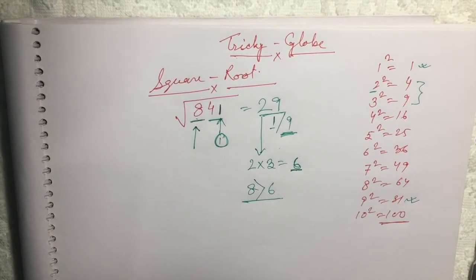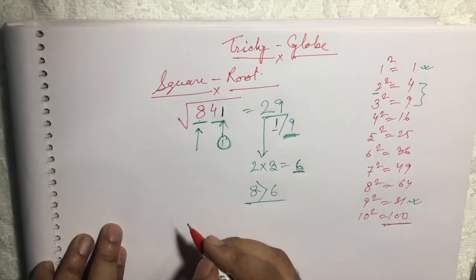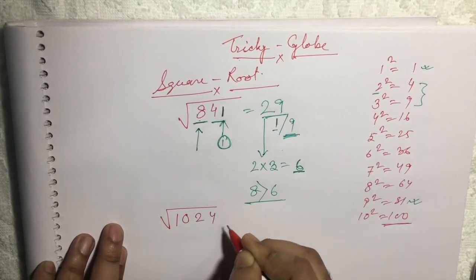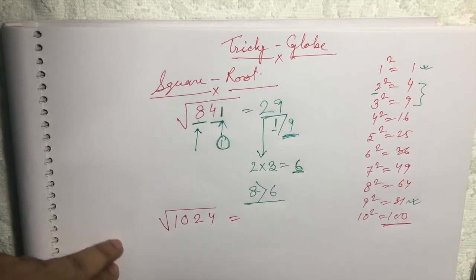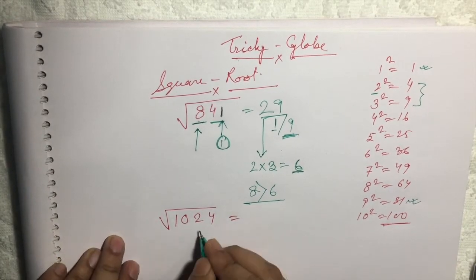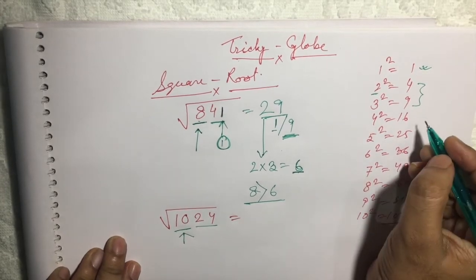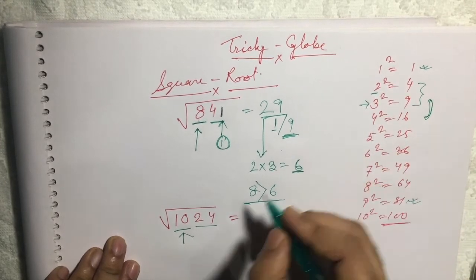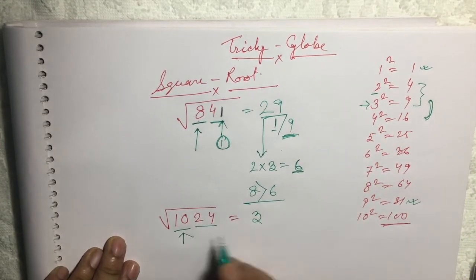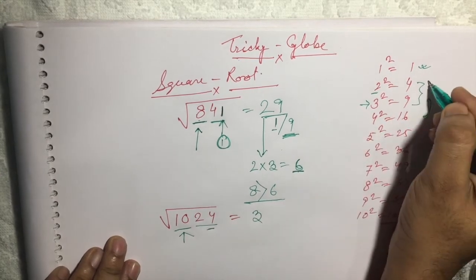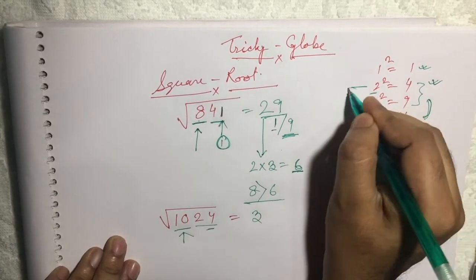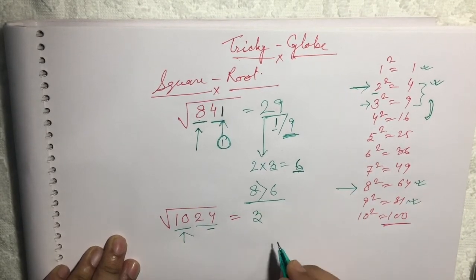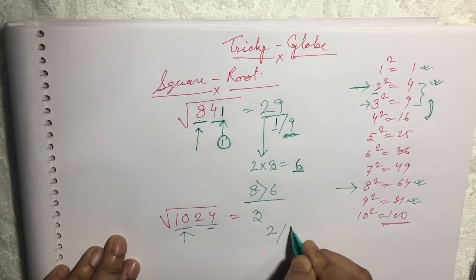Let's take another example: the square root of 1024. Again we make pairs: 24 and 10. Now 10 is in between 9 and 16, so our first digit will be 3. For the second digit, we have 4 in the unit place. 4 appears in 2 squared and 8 squared, so the answer will end in either 2 or 8.